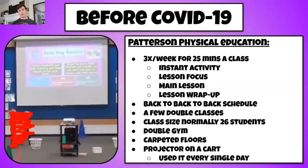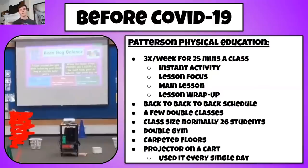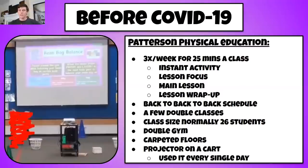After the instant activity, we gather at the center circle, go over our lesson focus — the what, why, and how — then get into the main part of the lesson for about 14 minutes. Afterward, we bring it back to the center circle, wrap up, and do a little assessment or cognitive question. I have a back-to-back schedule with no breaks in between classes — sometimes going from fifth grade right to kindergarten. The projector really helps with those transition times.